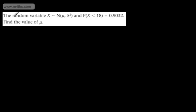In this question, we're told the random variable X follows a normal distribution with mean μ, variance of 5², and the probability that X is less than 18 is equal to 0.9032. We need to find the value of μ, so we want the mean.